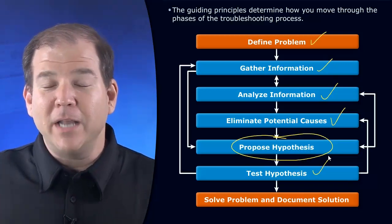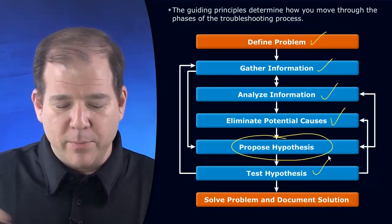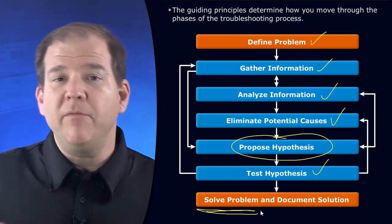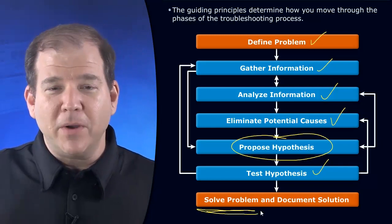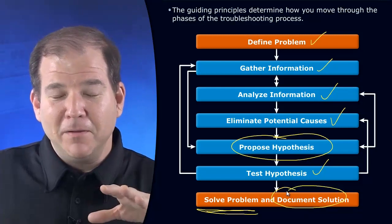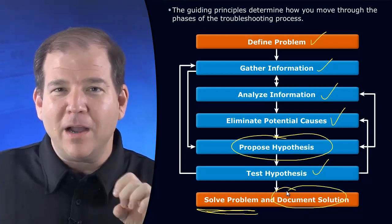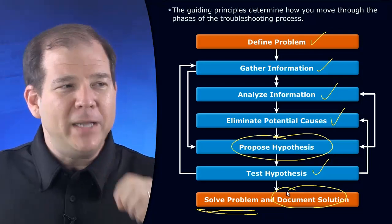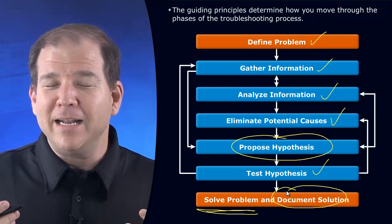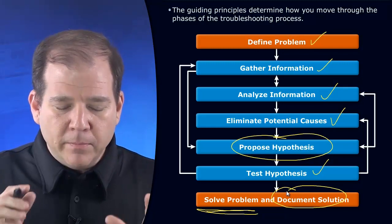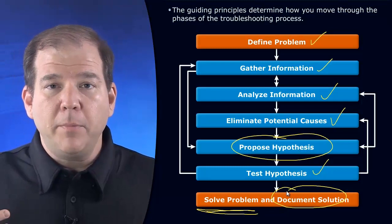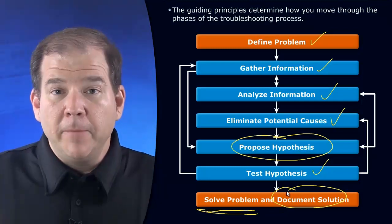You might want to schedule that reboot for a maintenance window as an example. But once you test your hypothesis, hopefully we've solved the problem. And we want to then document our solution. This is a discipline that many people lack — the documentation of what happened. That's not the exciting or urgent part of your day-to-day job typically, but we need to be very disciplined about documenting what we found. It's not only going to help us later on, it's going to help other network engineers that we work with.